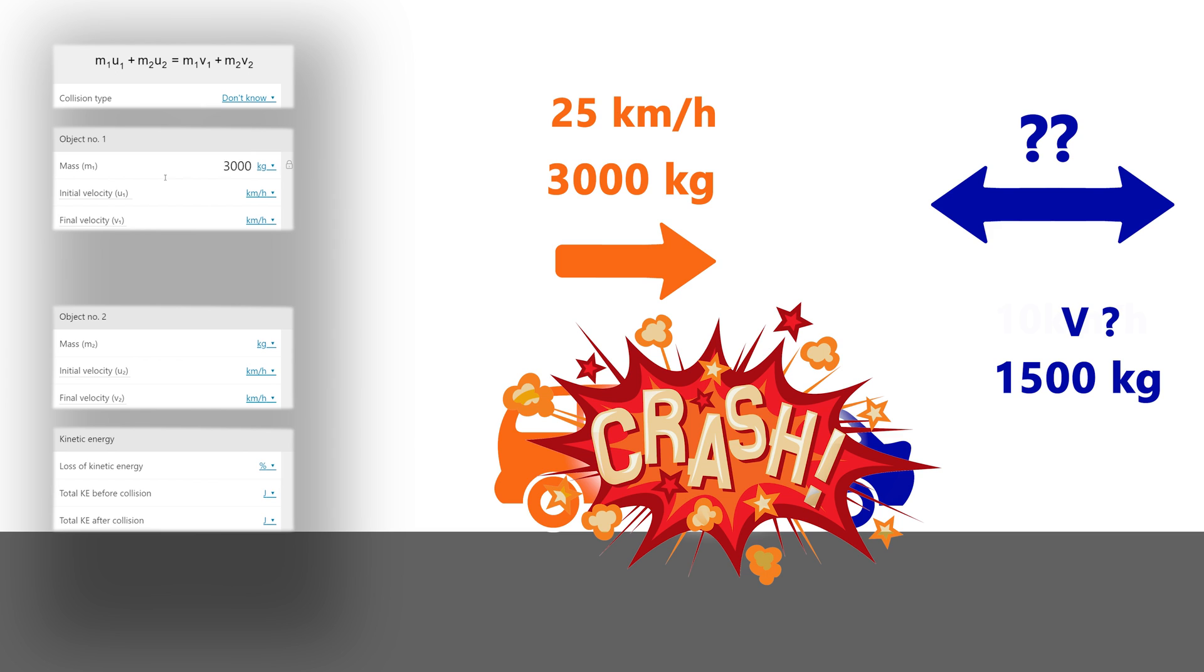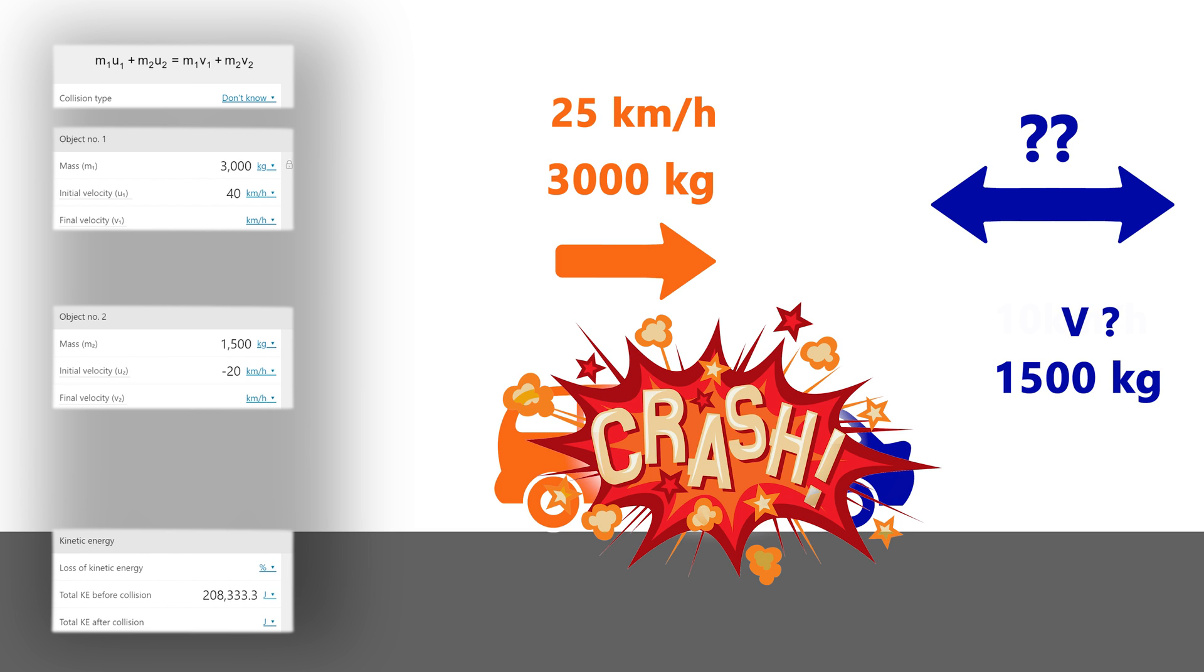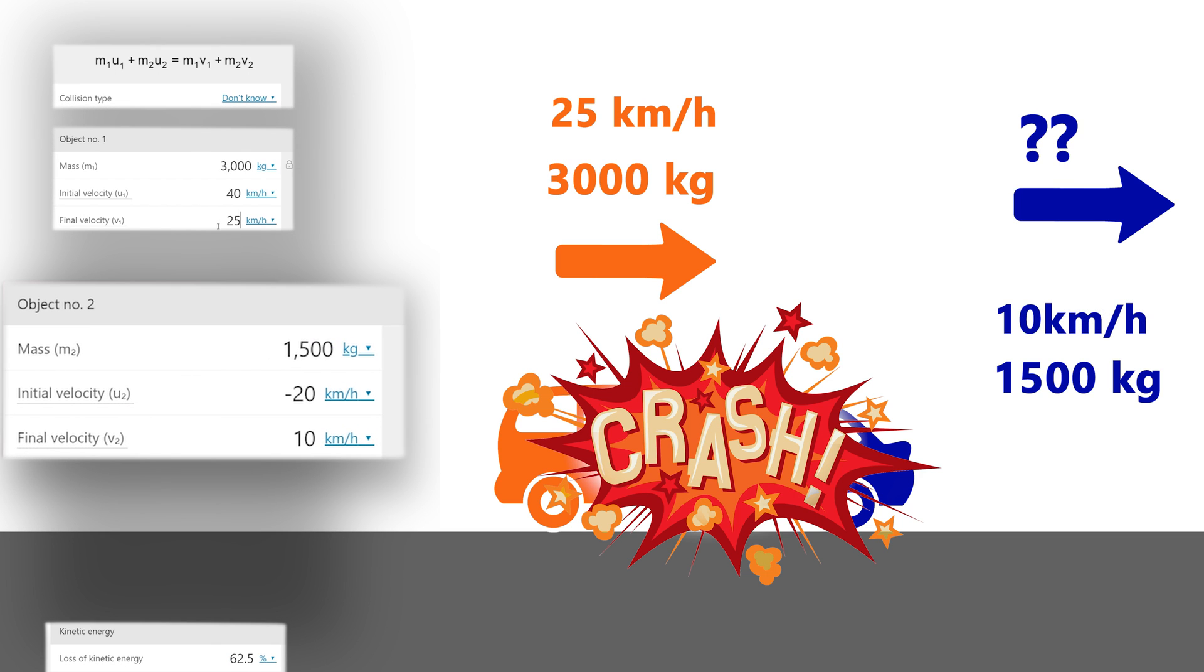After the collision, the heavy car slows down to 25 kilometers per hour in the same direction that it was moving. The question is what happens to the smaller car? It turns out that the lighter car also moves to the right at 10 kilometers per hour. Remember that negative numbers mean moving to the left and positive numbers means moving to the right. Also momentum is conserved because in every collision without external forces momentum will always be conserved.